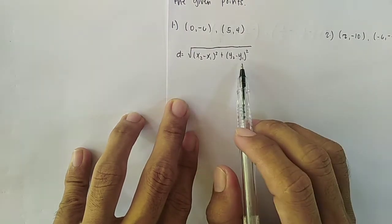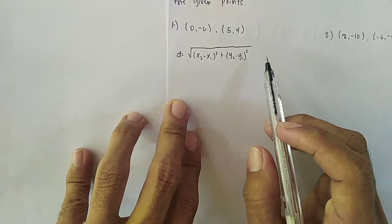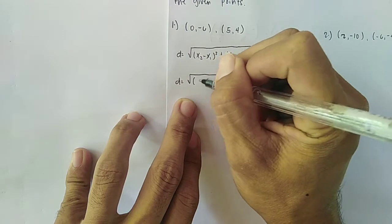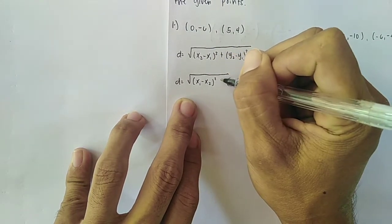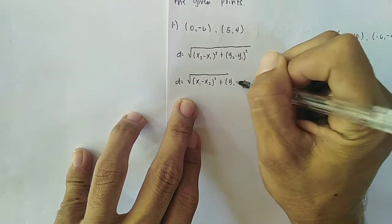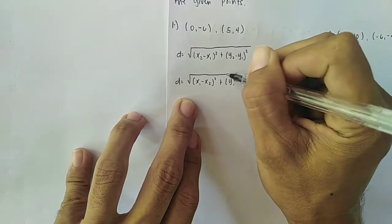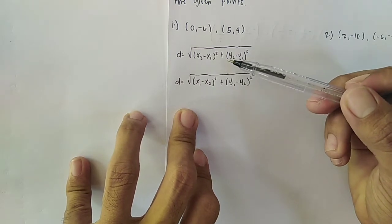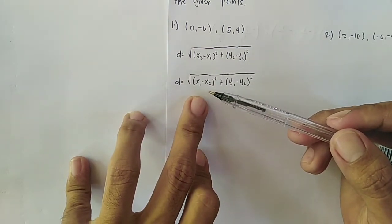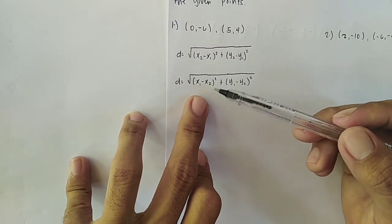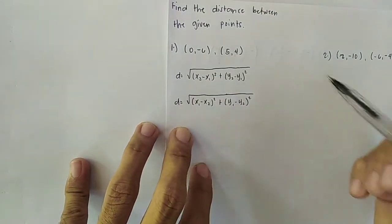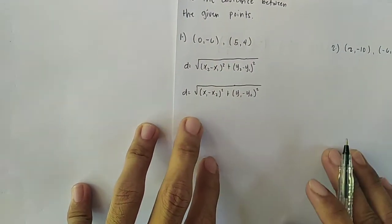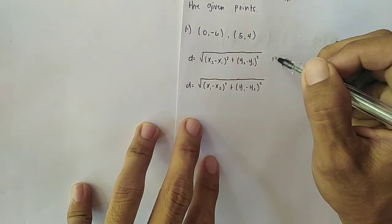We can also rewrite this formula with x₁ and y₁ coming first: D equals the square root of (x₁ minus x₂)² plus (y₁ minus y₂)². Either of the two distance formulas can be used, as long as you write it correctly. Our main task is to find the distance between the two points. Let us start using the first formula.